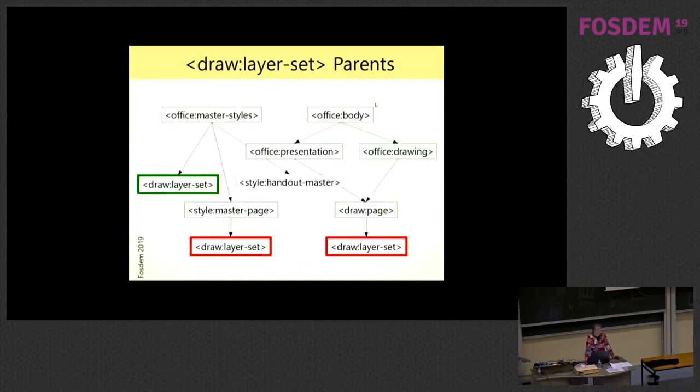Where can such layer sets be placed? ODF knows three places where it can be. It can be inside a page and the page is part of a drawing or a presentation. If one such page has a layer set, then it is used for this page and only for this page. Another page could have a different layer set. Then we have the place that it can be in the master page. It would be used for those pages which have assigned this master page and have no own layer set. And the layer set can be placed in the master styles. That is a fallback and is used if a page has no own layer set or no layer set via the master page.